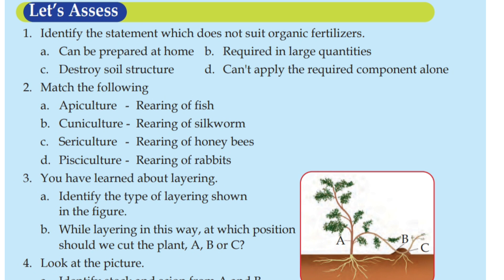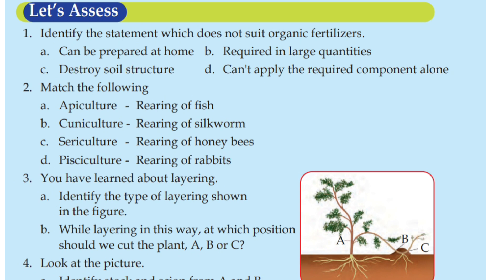Identify the type of layering shown in the picture. This is the serpentine layering. For example, a pepper plant — you can use the long branches for serpentine layering. While layering in this way, at which position should we cut the plant? A, B, or C?